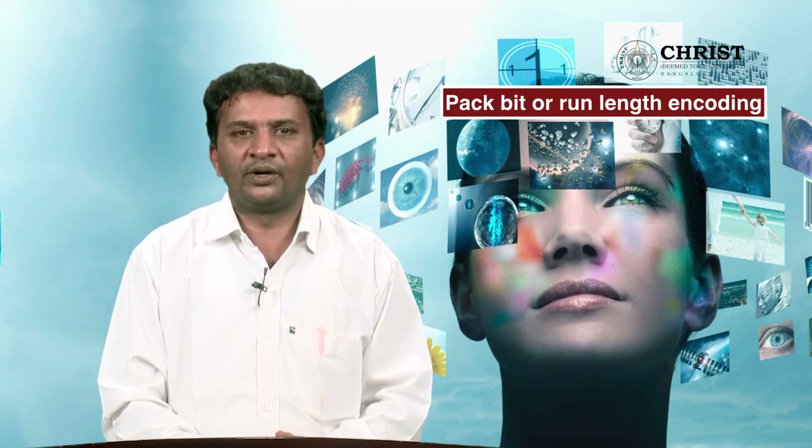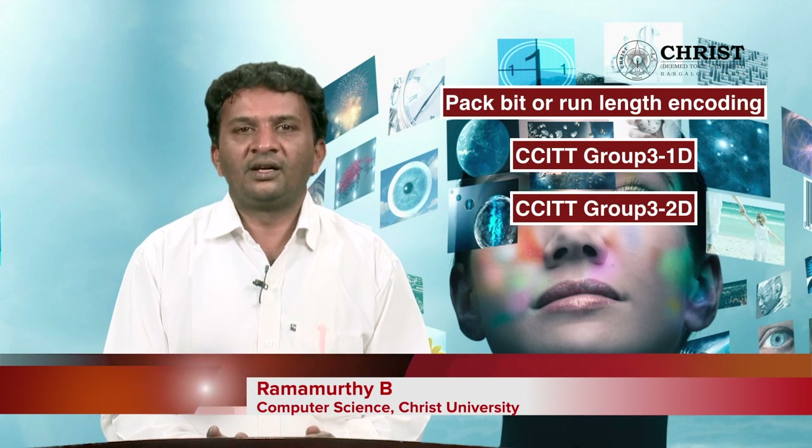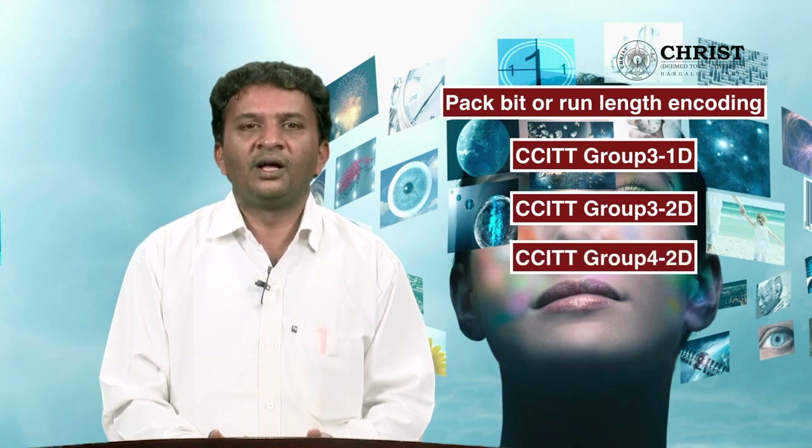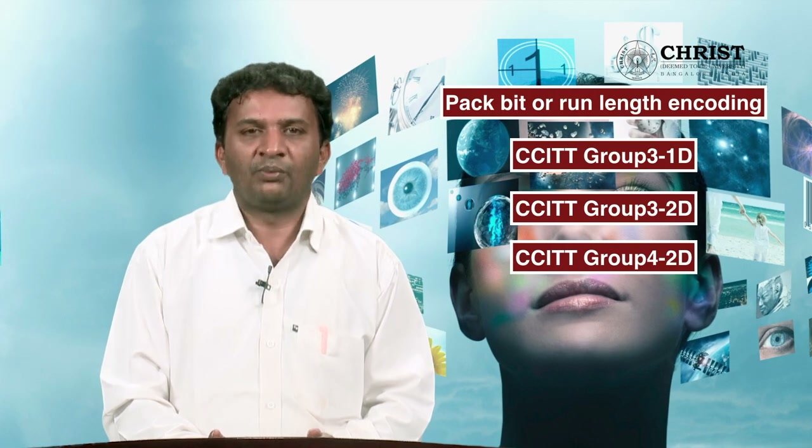In summary: pack bit or run length encoding is a run-length-based encoding that replaces data with 2-byte information. CCITT Group 3 1D performs line-by-line encoding. CCITT Group 3 2D performs group-by-group encoding. CCITT Group 4 2D performs page-by-page encoding of the entire document.